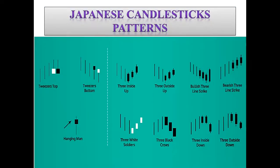This is tweezers top and tweezers bottom. These are: three inside-up, three outside-up, bullish three-line striker, bearish three-line striker, three outside-down, three inside-down, three black crows, and three white soldiers. This is a hanging man pattern.